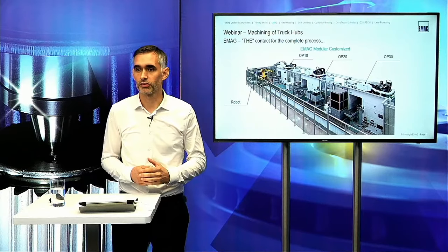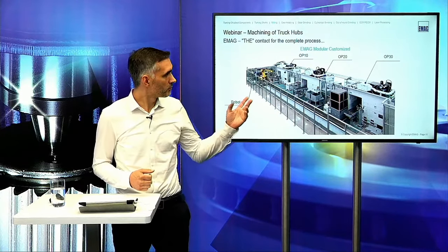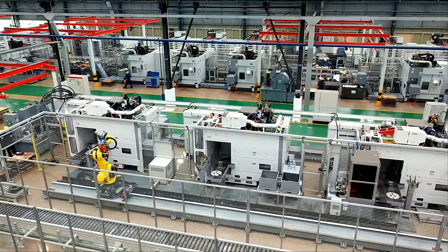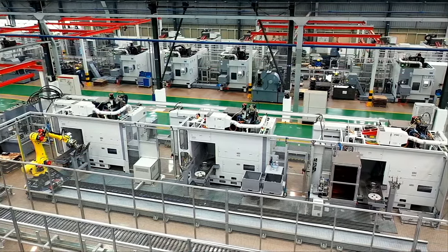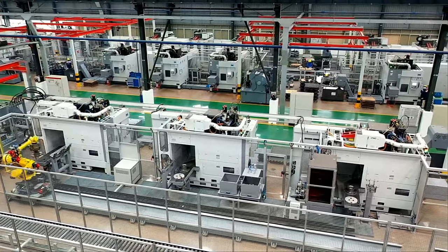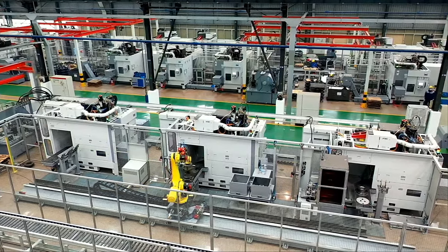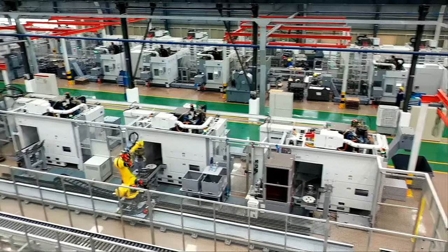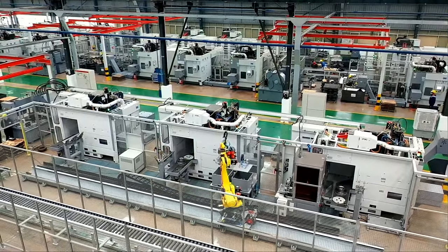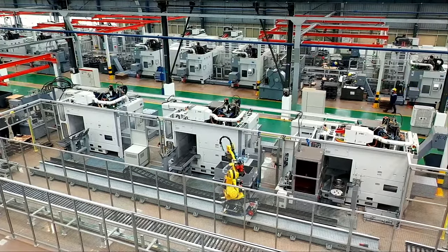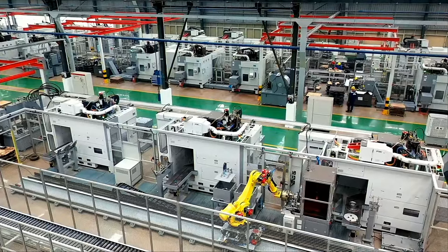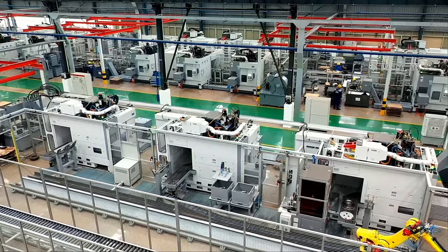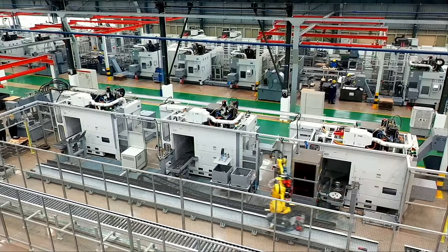This line is not only for hub production — on the video you can see discs also in production. We see the unloading of OP10, the part is re-gripped for OP20, and the robot moves to the next machine on an external axis. After OP20, we load the blow box for cleaning. A different orientation is needed for loading and unloading the laser marking system. After laser marking, the part is fed out of the line on an external conveyor for next operations.